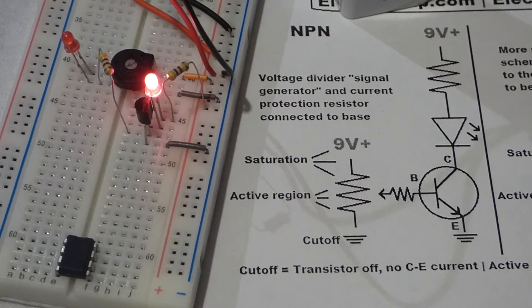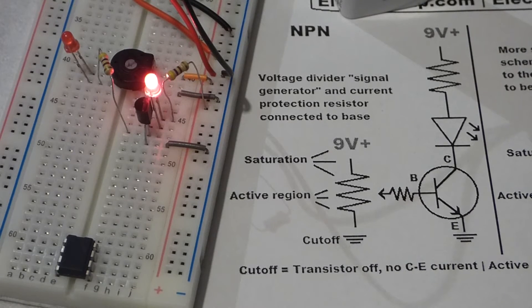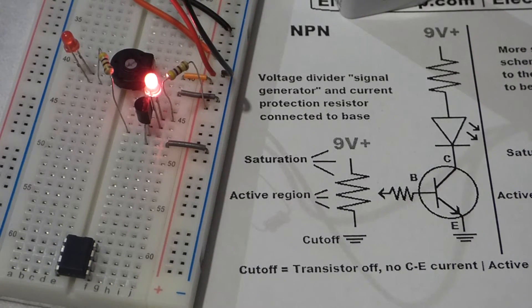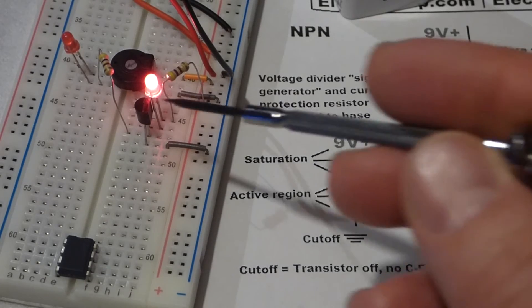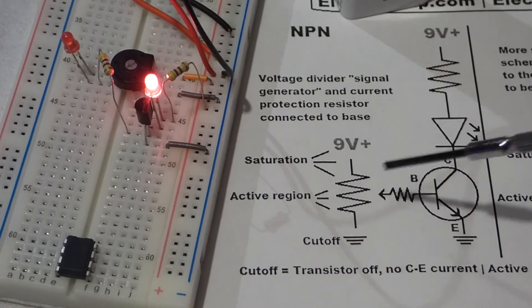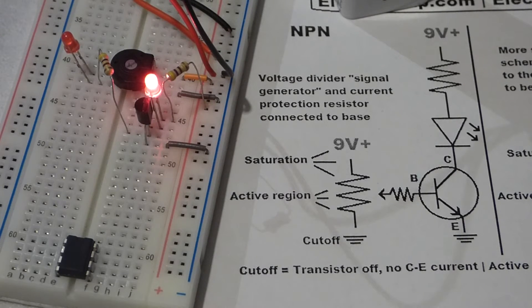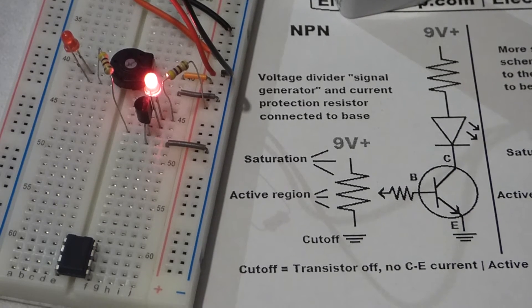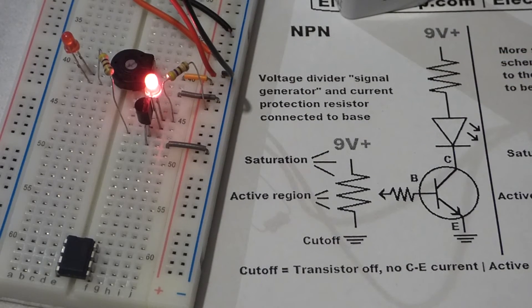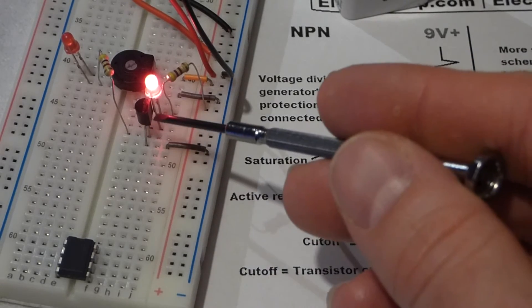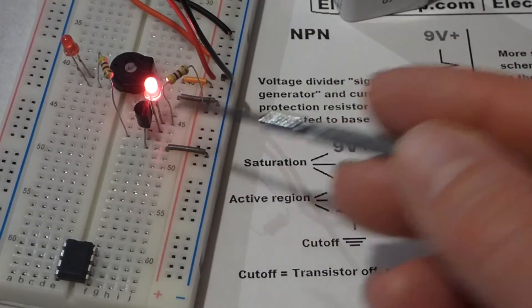For every fraction of a milliamp of current that makes it to the base, probably about a hundred times more milliamps of current actually go through the transistor via the collector. That's called the gain. If there's a multiple of a hundred when it comes to current through the collector versus the base, then it would have a gain of a hundred.